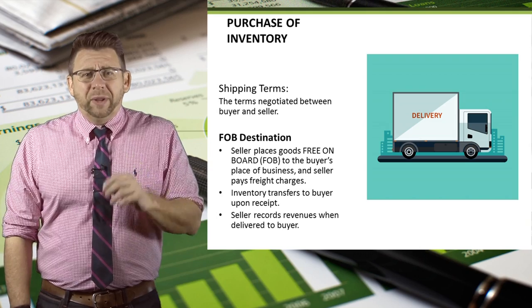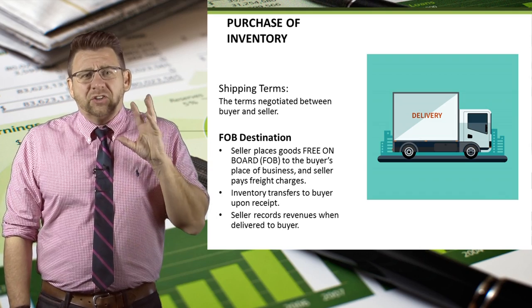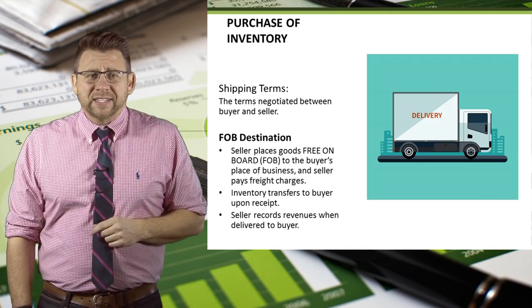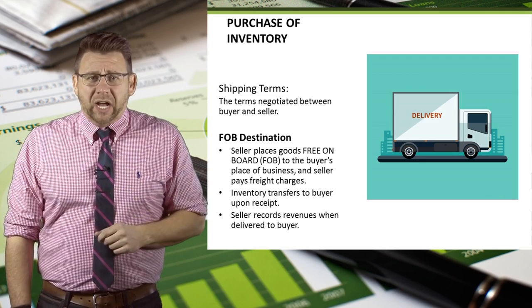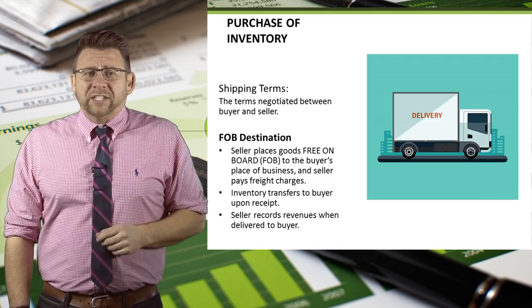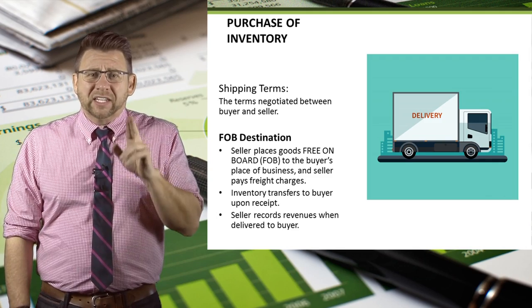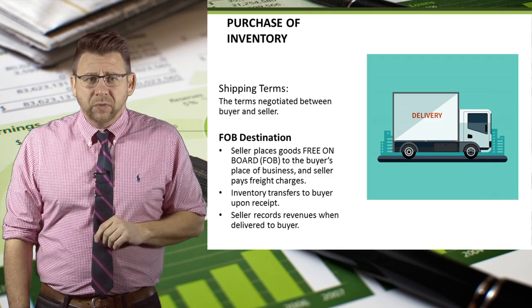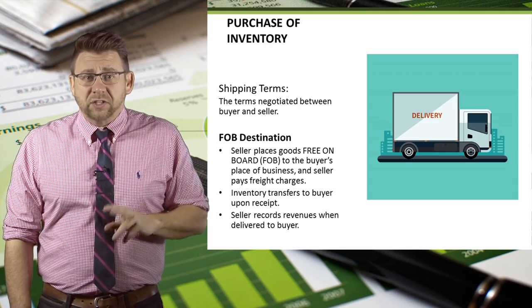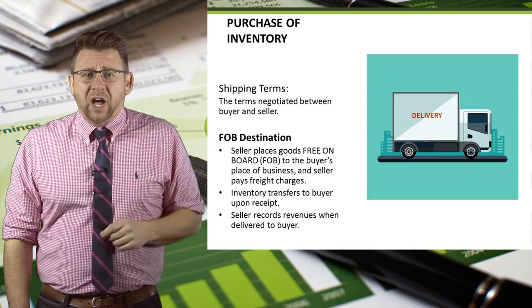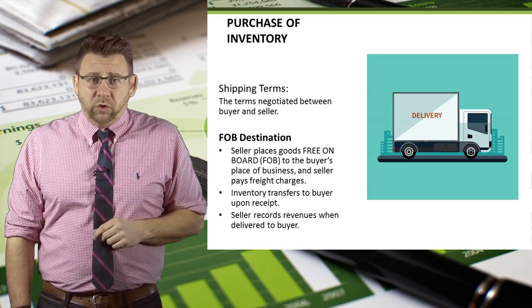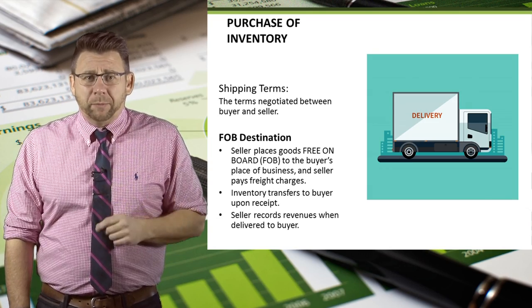For FOB destination, a seller delivers goods to a common carrier, again like UPS or FedEx, at the seller's shipping dock. However, inventory doesn't transfer to the buyer until it is received by the buyer. In this case, the seller pays the freight costs directly to the common carrier, and the seller does not record the revenue until the goods are received by the buyer.